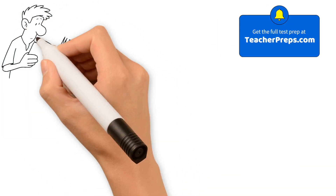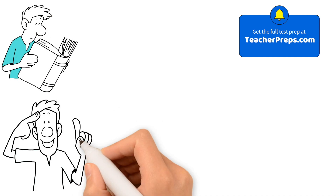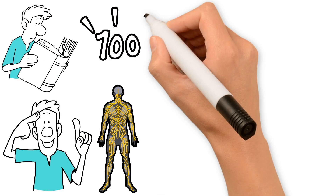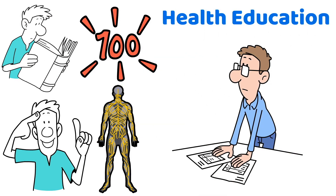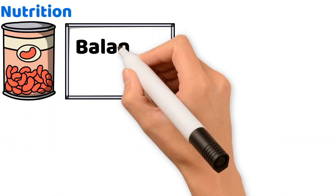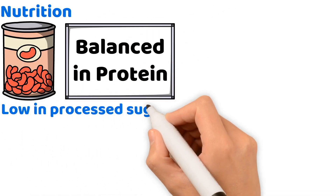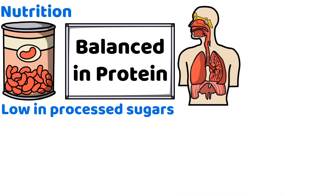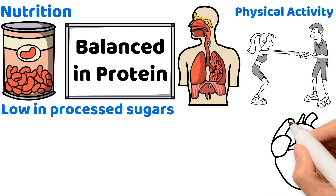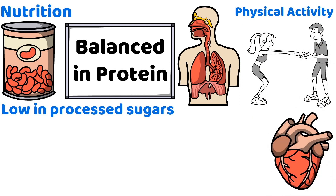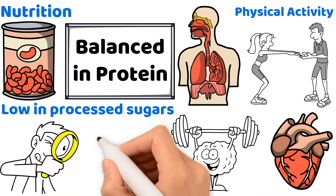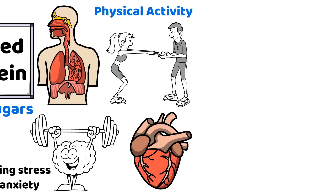In preparing for your teacher certification exam, it's important to understand how health behaviors influence the body's systems. Let's start with nutrition — a diet rich in fiber, balanced in protein, and low in processed sugars significantly enhances digestive health and boosts metabolism. Moving on to physical activity: regular exercise strengthens the heart and muscles and plays a critical role in mental health by reducing stress and anxiety. Be on the lookout for answer options that help students appreciate the value of staying active.